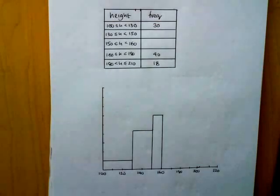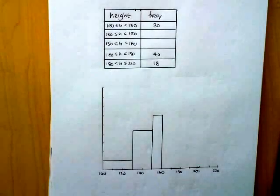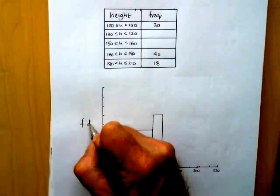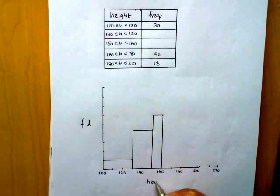Hey, another GCSE past paper histogram question. Another one where we have to complete our table and also complete our histogram. I'll just add a couple of things I've missed off, so we'll add frequency density and our heights here.